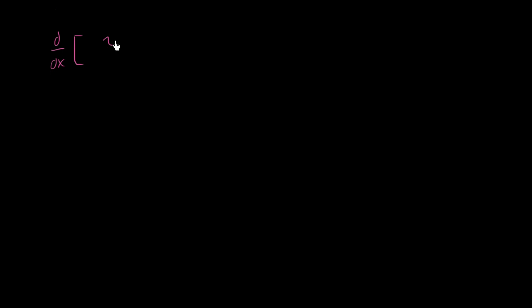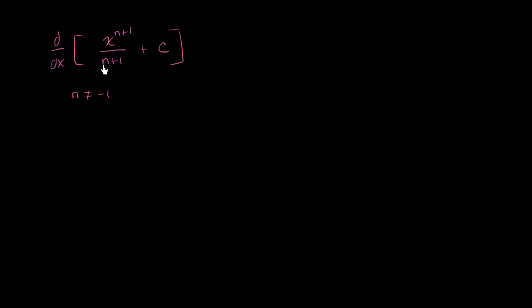Let's take the derivative with respect to x of x to the n plus 1 power over n plus 1, plus some constant c. We're going to assume, because we want this expression to be defined, that n does not equal negative 1. If it equaled negative 1, we'd be dividing by 0, and we haven't defined what that means.